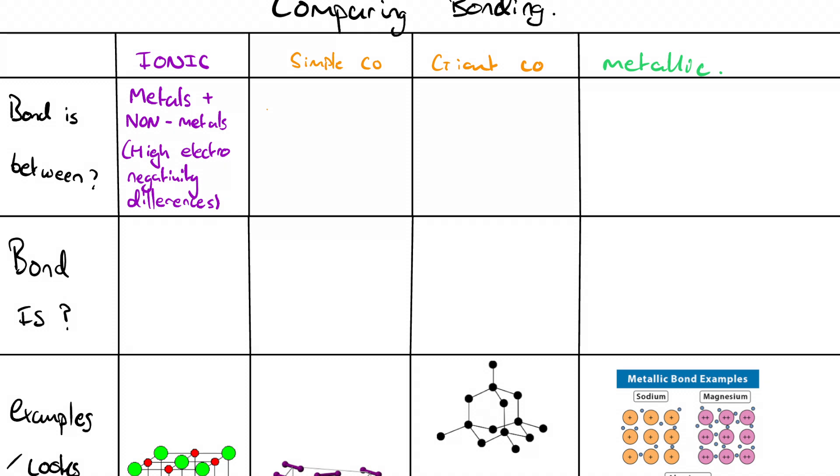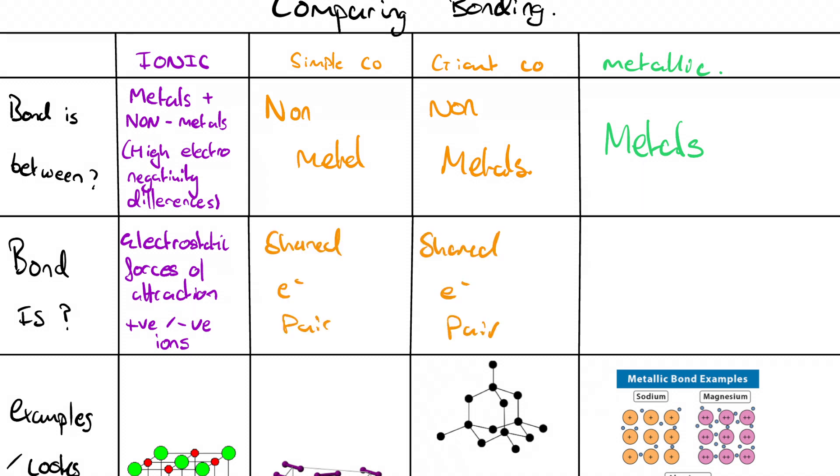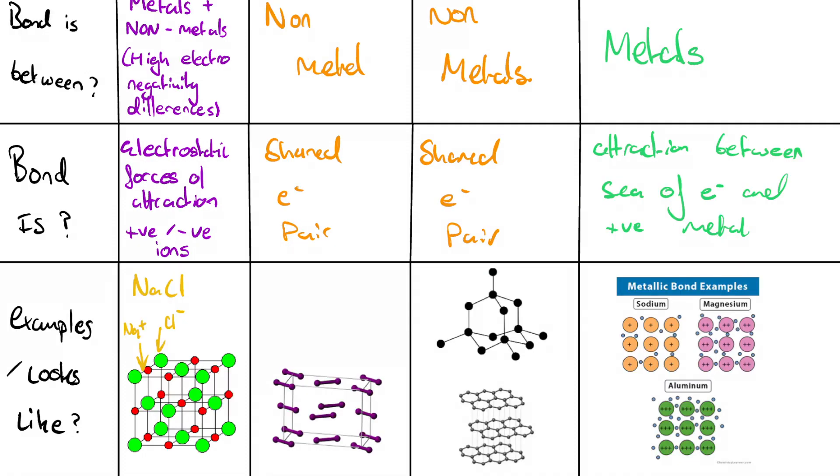The first row we're going to fill out is the bond is between. And by this, I mean that ionic is going to be between metals and non-metals because of the large difference in electronegativity as we've just discussed. Covalent are always going to be between non-metal things. Carbon, oxygen, the halogens. Metallic bonds are between metals as the name implies. This column that says the bond is. An ionic bond is the electrostatic attraction between positive and negative ions. Covalent is the shared pair of electrons. And metallic is the attraction between the delocalized sea of electrons and the positive ions.